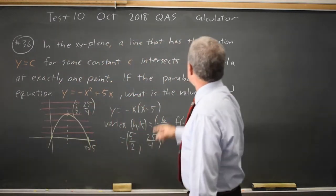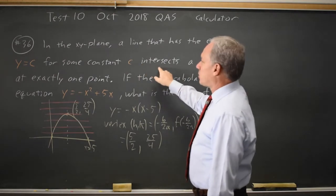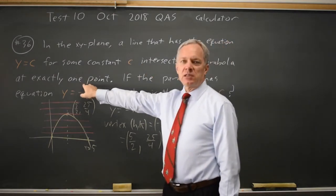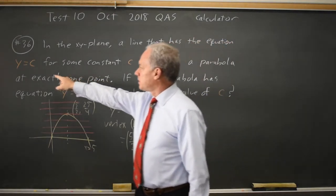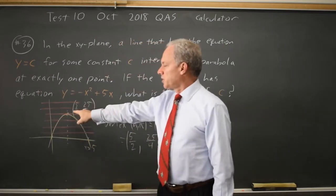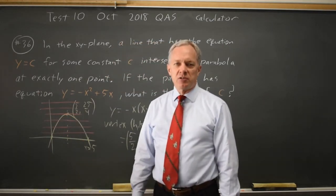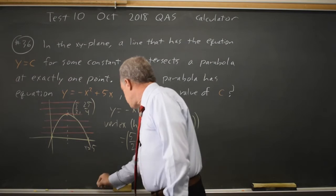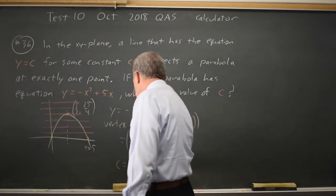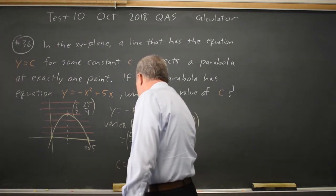So if x equals c intersects a parabola at exactly one point—I'm sorry, if y equals c intersects at exactly one point, then c is the y value at the vertex, which gives me c equals 25 over 4.